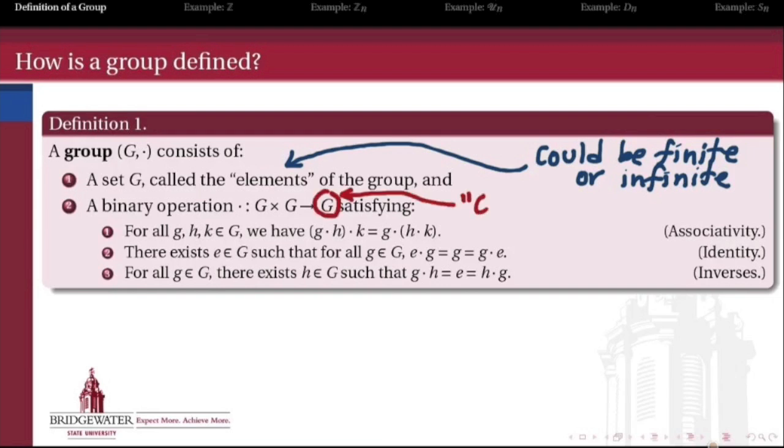The most important things about this operation are, first, closure, meaning that if I take two group elements and operate on them, the result is still an element of that group. Associativity is the next big thing—if I'm operating on three elements in the same order, it doesn't matter if I do the first pair first or the second pair first, I end up with the same answer.